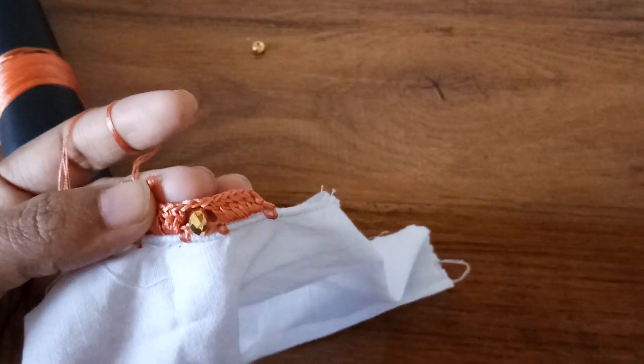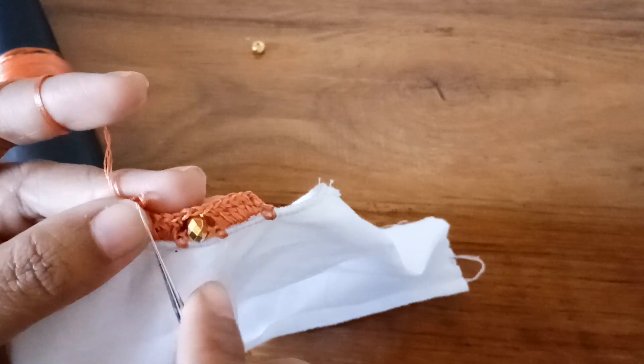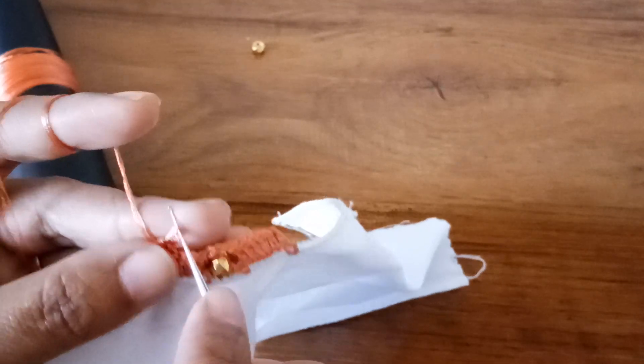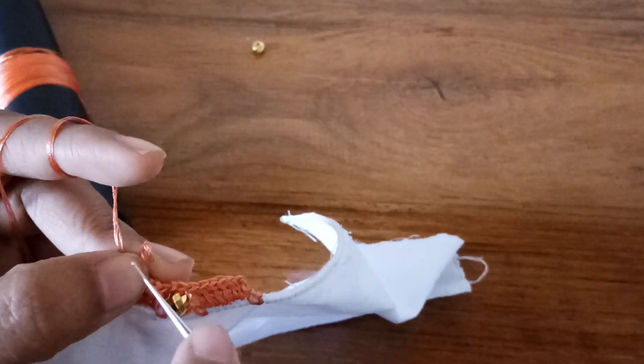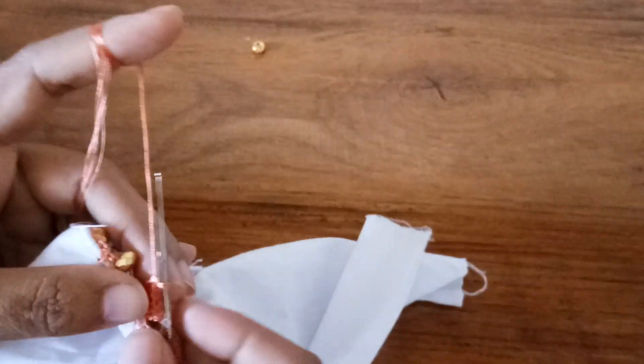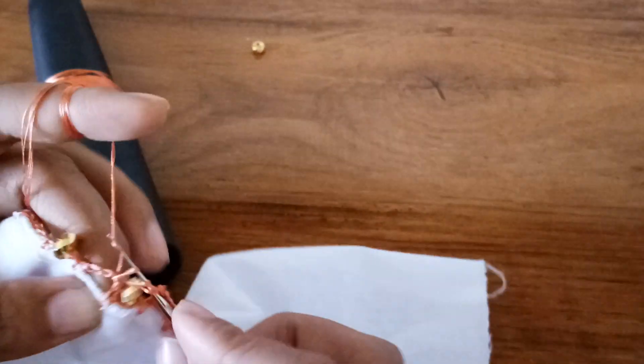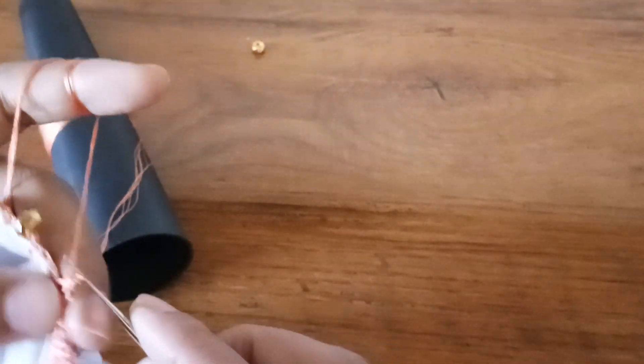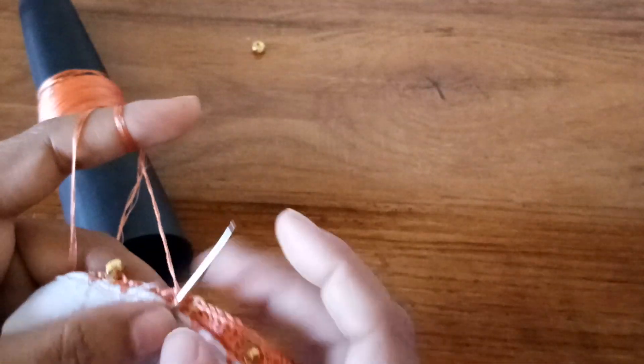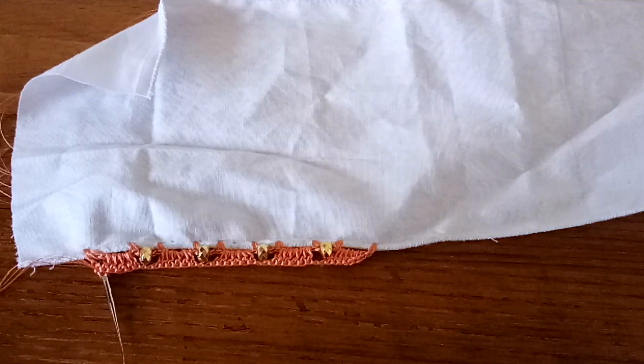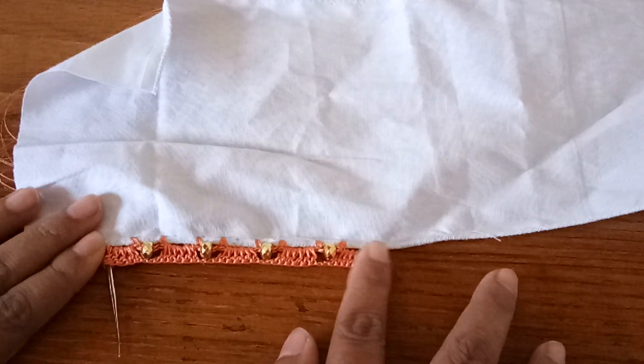This pattern is just with double crochets. As I told you earlier, it is a very simple pattern. Now again make two chains and make six double crochets into the gap, and you can continue the pattern.